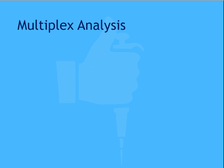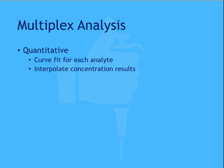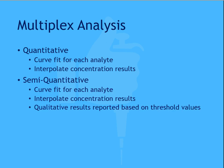There are three main ways multiplex assays are typically analyzed. Quantitative assays perform a curve fit for each analyte and concentration results are interpolated from the curve. Semi-quantitative assays perform a curve fit for each analyte, but those concentration results are reported as qualitative designations, such as positive or negative, based on threshold values.